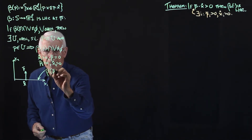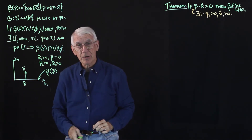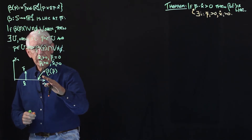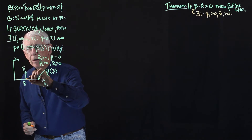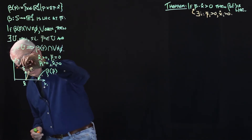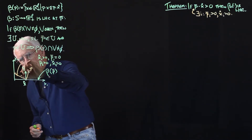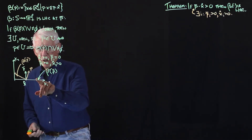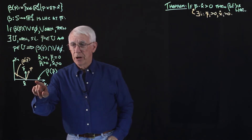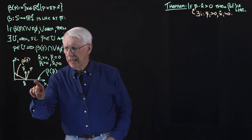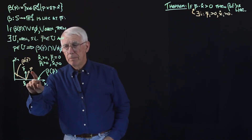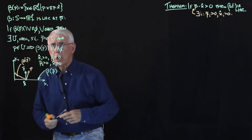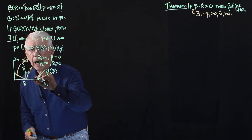The budget set at P bar is simply the horizontal axis — the X1 axis. Now what happens if the price of the first good increases even a little bit? We're going to have a price list that looks like this and a budget set that collapses down to a triangle. All those bundles out on the X1 axis that are in the budget set at P bar instantaneously disappear from the budget set as soon as the price of the first good becomes positive.